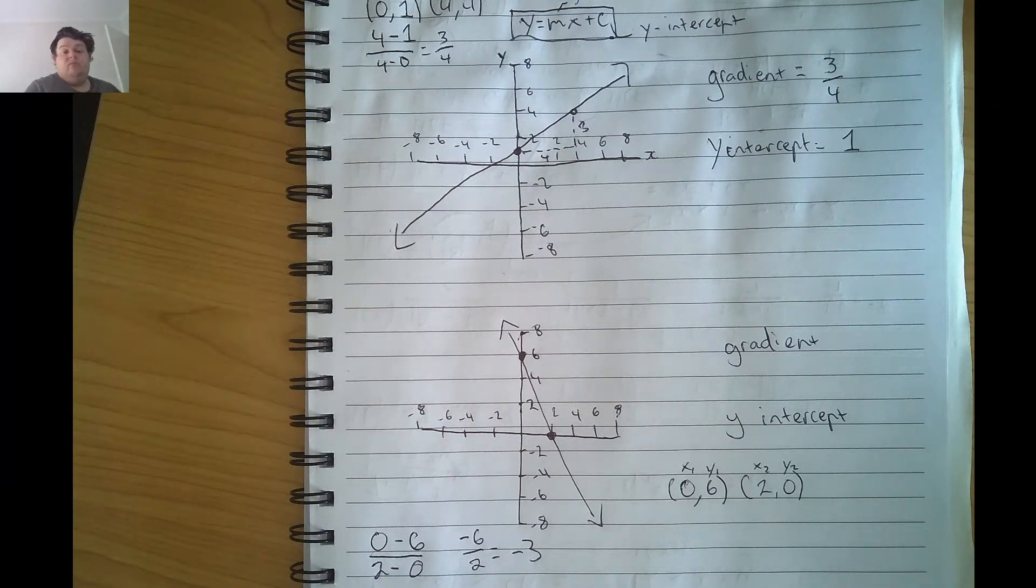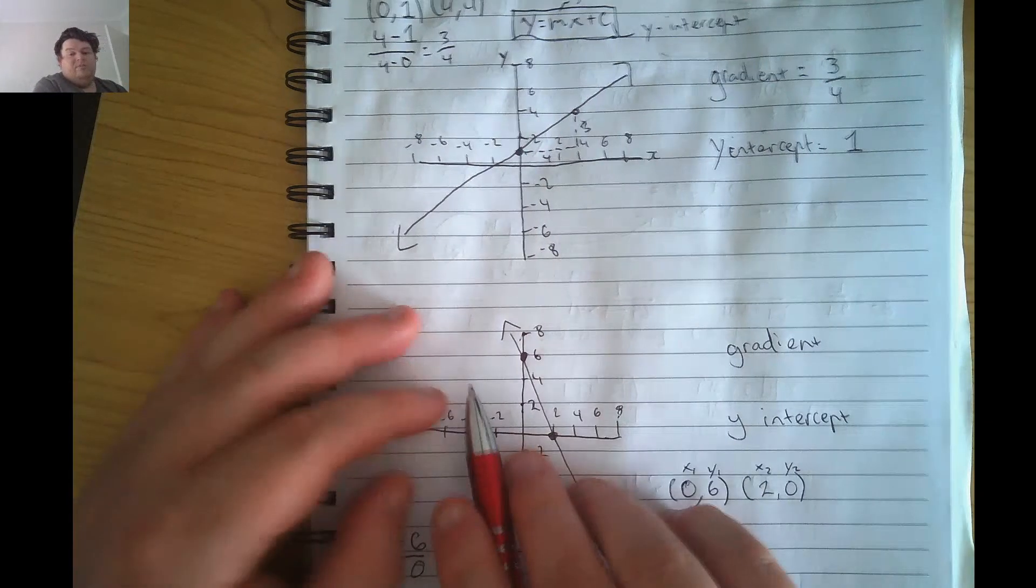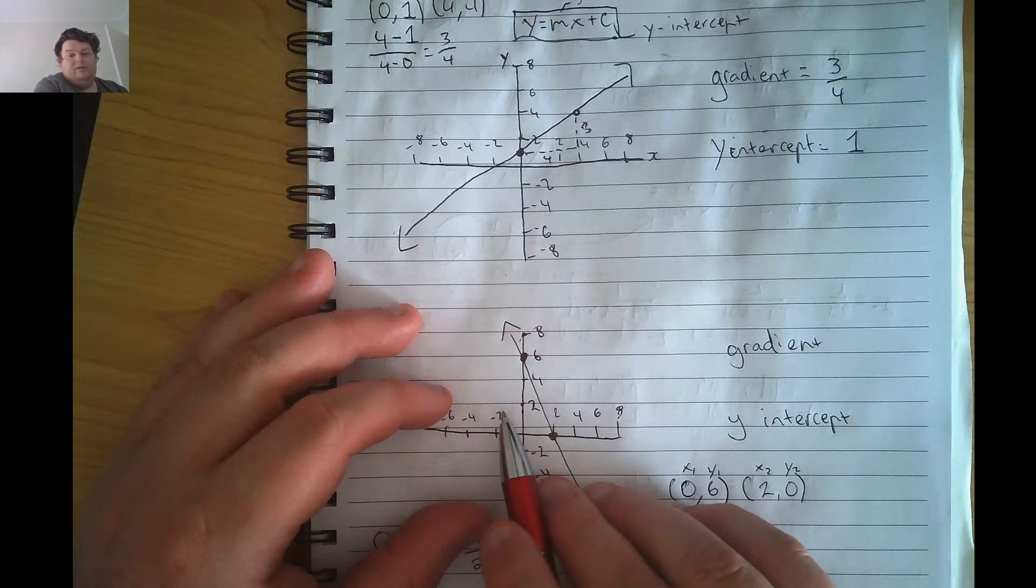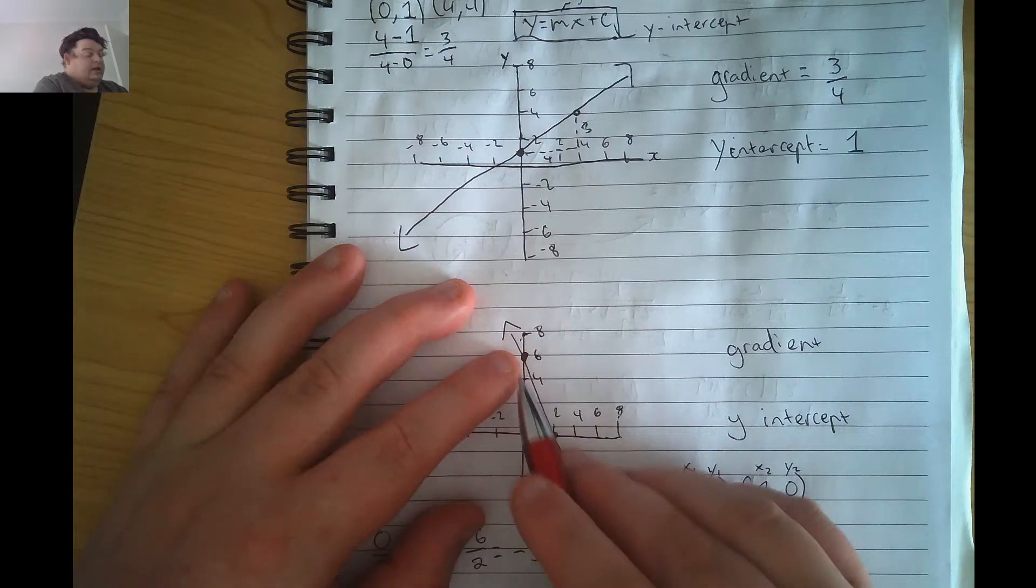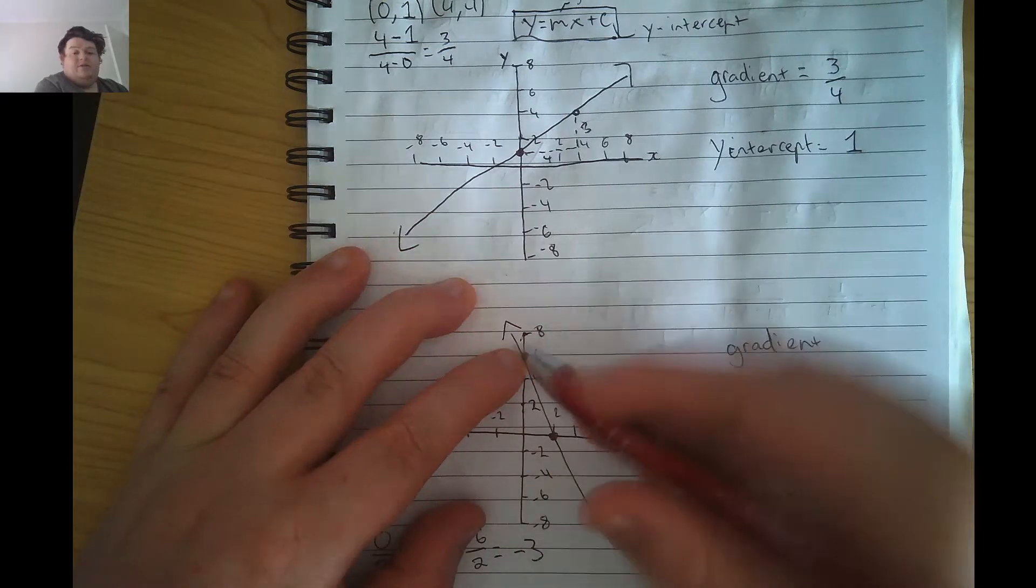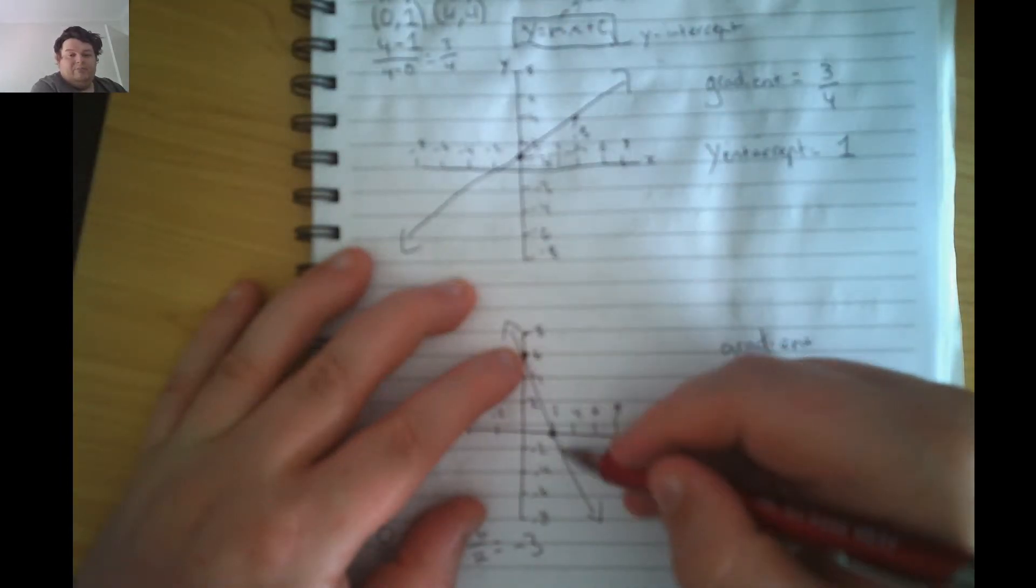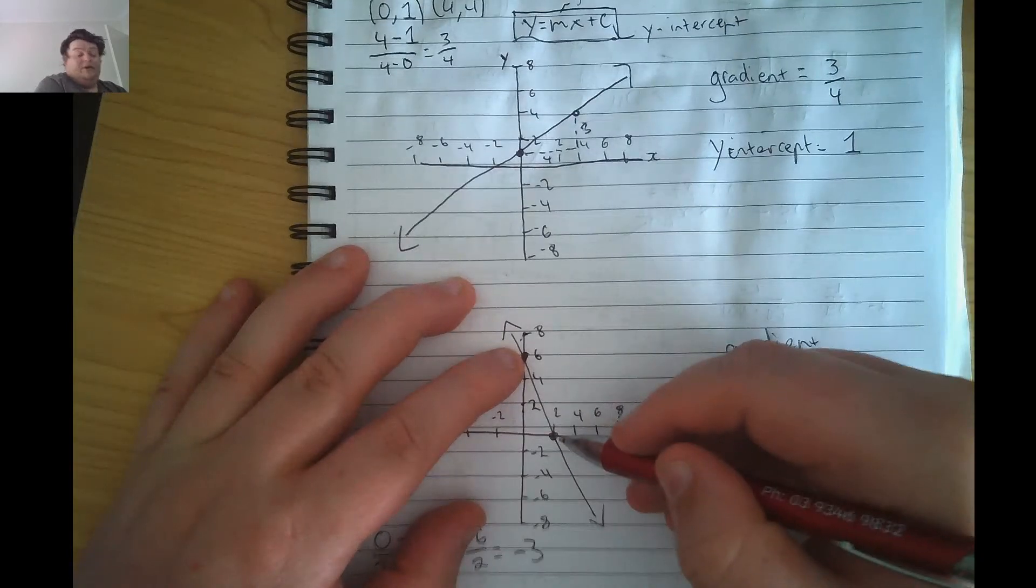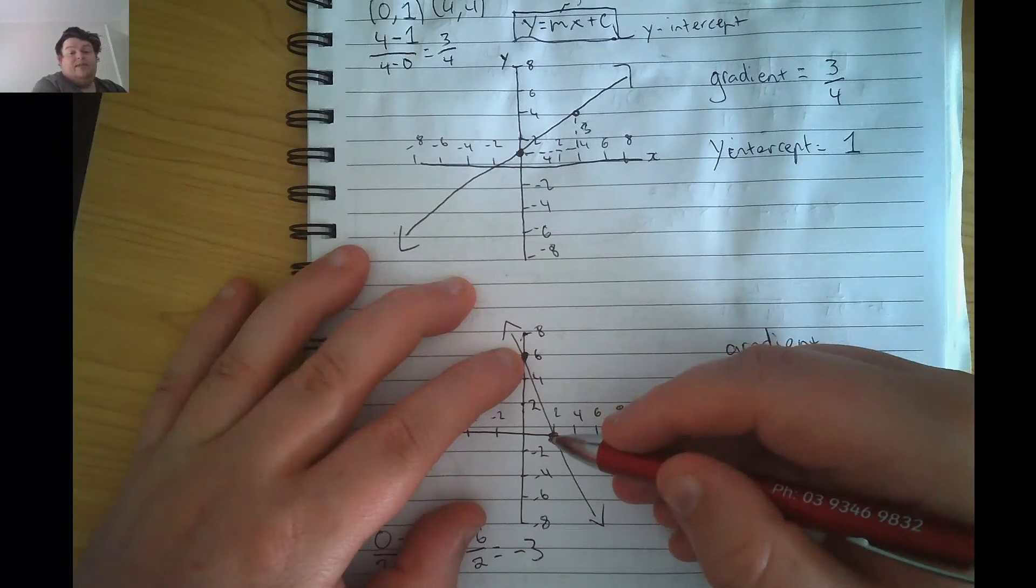And I can do the same with rise over run. So between these two points, we're always going to measure from left to right. I'm looking here. The first point is up here. How much does it rise between here and the next point? The answer is it doesn't rise. It actually goes down. So we represent that with a negative value.